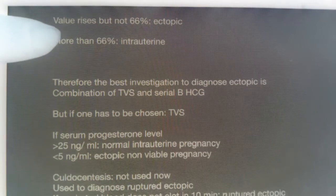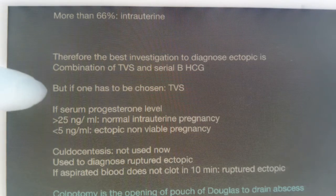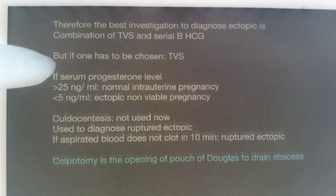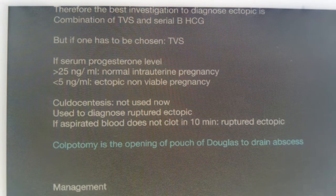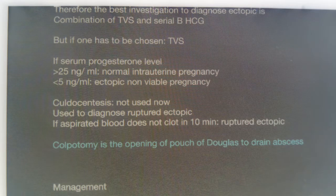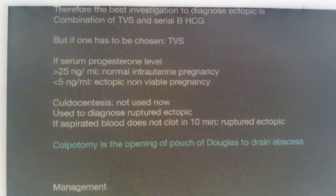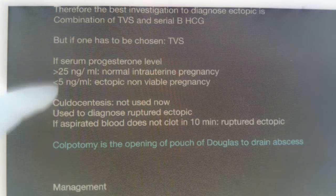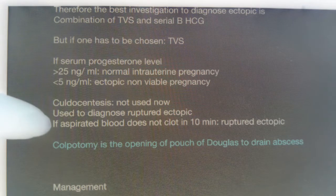The best investigation to diagnose ectopic is a combination of transvaginal ultrasonography (TVS) and serial beta hCG. If you must choose one, transvaginal ultrasonography is the most confirmatory. Serum progesterone is another test: greater than 25 ng/mL indicates a normal intrauterine pregnancy; less than 5 ng/mL indicates a non-viable or ectopic pregnancy.